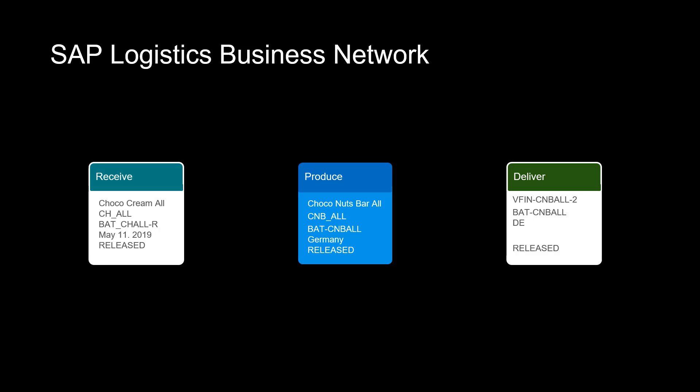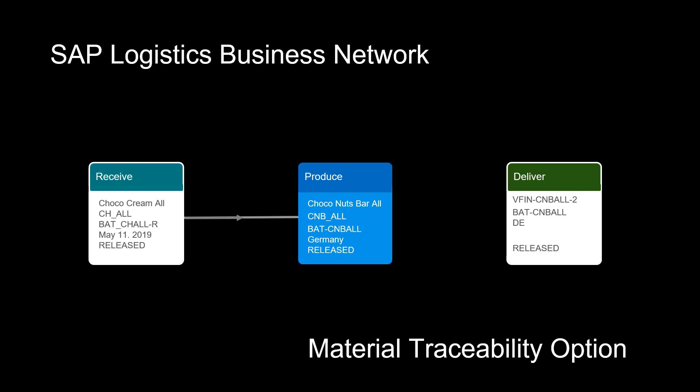SAP Logistics Business Network Material Traceability option is an application augmented by blockchain technology. It improves transparency, visibility, sustainability, and efficiency by connecting the entire supply chain.